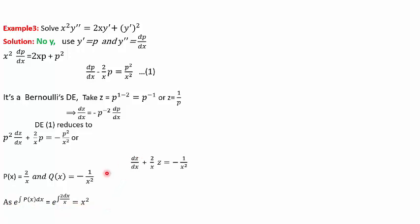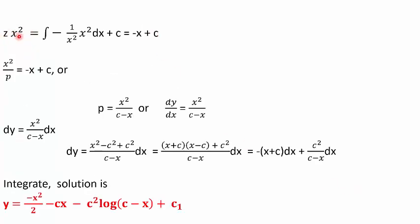The integrating factor is e^(∫P dx) = x². The solution is z·x² = ∫(−1/x²)·x²·dx + c = −x + c. Substituting back z = 1/p gives x²/p = −x + c, so p = x²/(c − x). Since p = dy/dx, we have dy/dx = x²/(c − x).